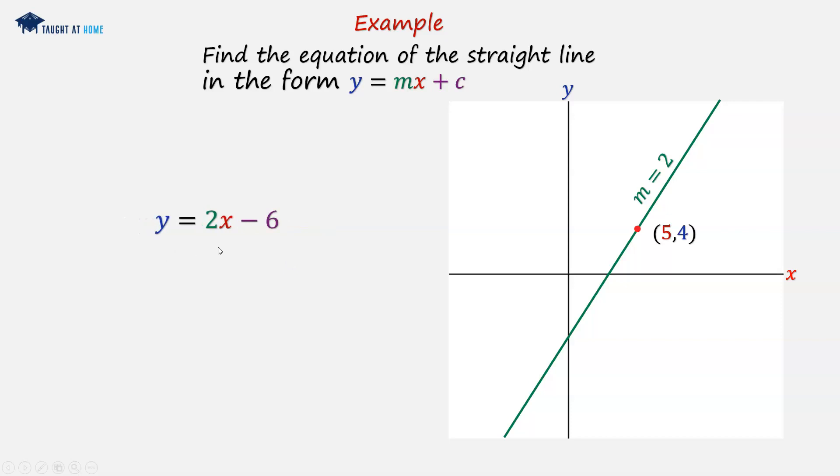Now we've got y equals 2x minus 6, which is in the form of y equals mx plus c, where m is 2 and c is minus 6.